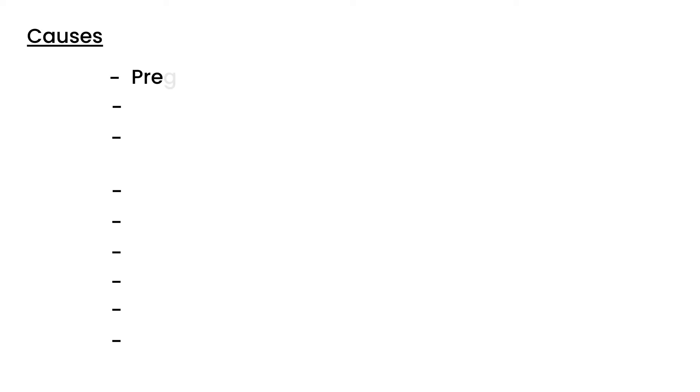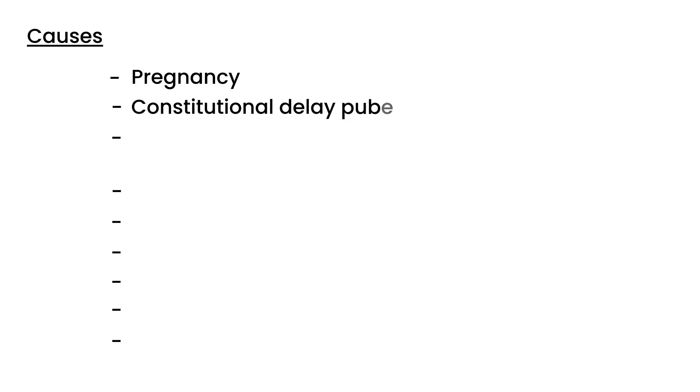I'm going to list nine causes of amenorrhea. It may seem daunting at first, but you can break it into basic categories. The first and by far most common cause is pregnancy — that's why the person has amenorrhea, she's pregnant. The second is constitutional delay of puberty, which basically means the teenage girl is late in puberty but all hormone levels are normal.